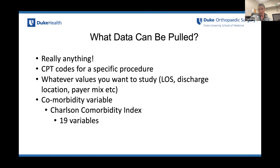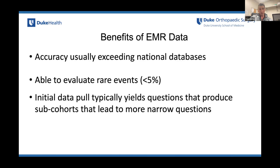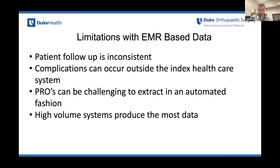The answer to what can be pulled is really anything. For EMR-based data they started with CPT codes, then looked at length of stay, discharge location, payer mix, and comorbidity variables. The benefits of EMR data are that accuracy usually exceeds national databases because it's your local institution. You're able to evaluate rare events, usually defined as less than 5%. And the initial data pool usually produces subcohorts that lead to more narrow questions. In terms of limitations, patient follow-up is really inconsistent — if a patient from Duke or Hopkins goes to another local healthcare system, you totally lose them in your EMR-based data. PROs are extremely challenging to capture and extract, and high-volume systems produce the most data.